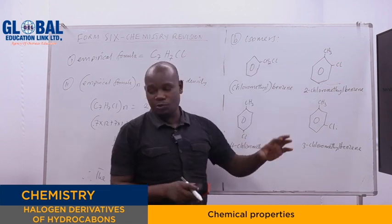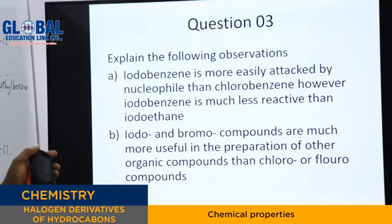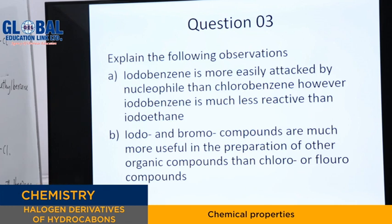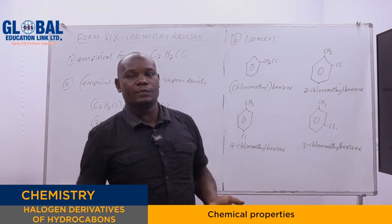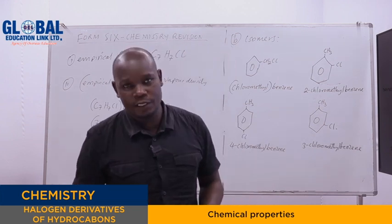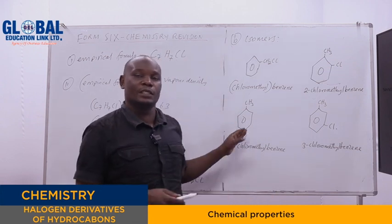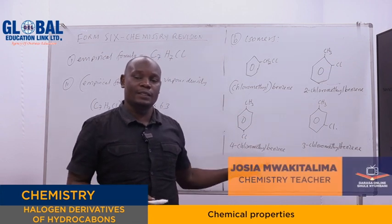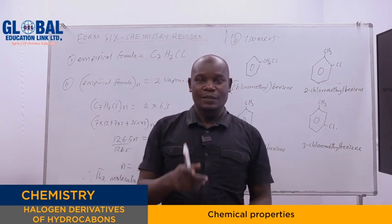Proceed and finish by writing those examples — take it as your assignment. Another question is also given for you to do as an assignment, to measure how much you have understood the lesson. This is the end of this presentation and I am sure that you have enjoyed it. I welcome you for the next period since we will proceed with the remaining chemical properties of halogens derivatives of hydrocarbon. Thank you very much. See you.